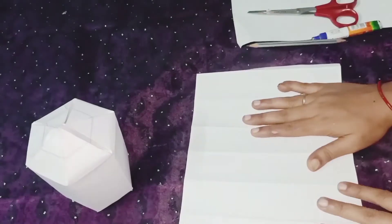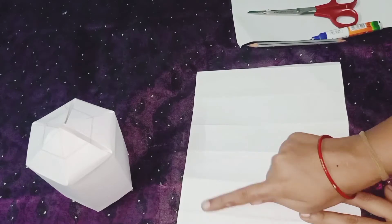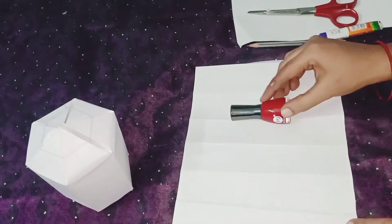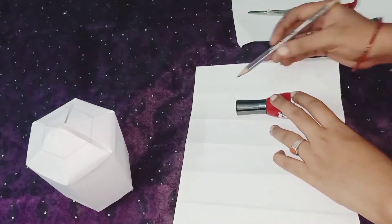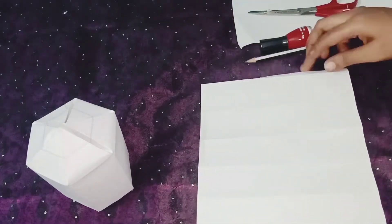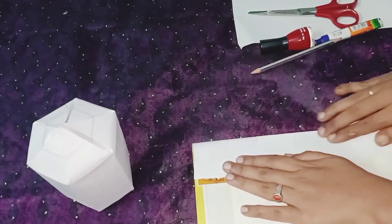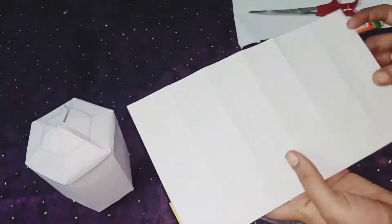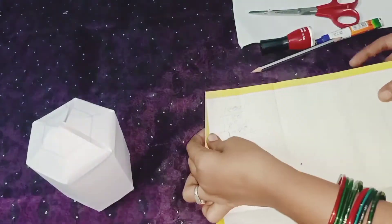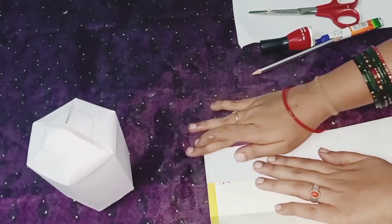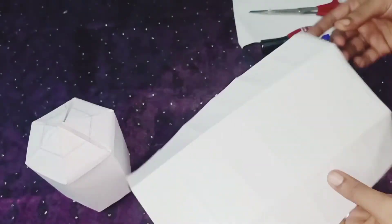After folding, segregate the paper as top, center and the bottom by using the things which we are going to give. Fold the top and bottom side like this.